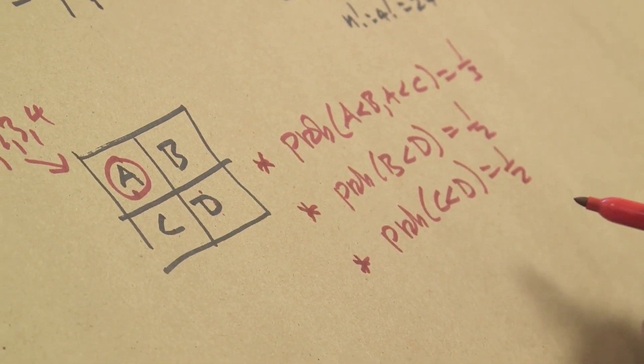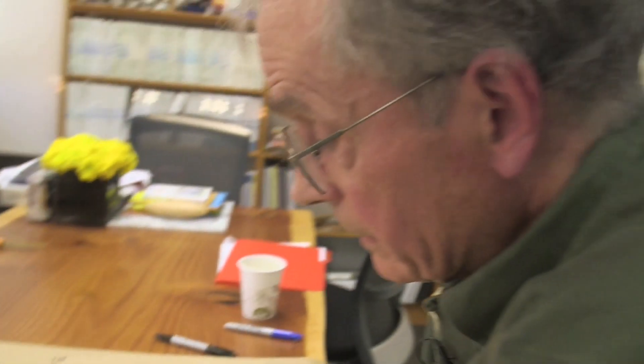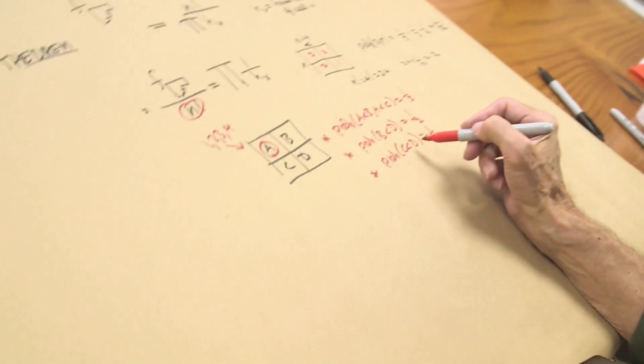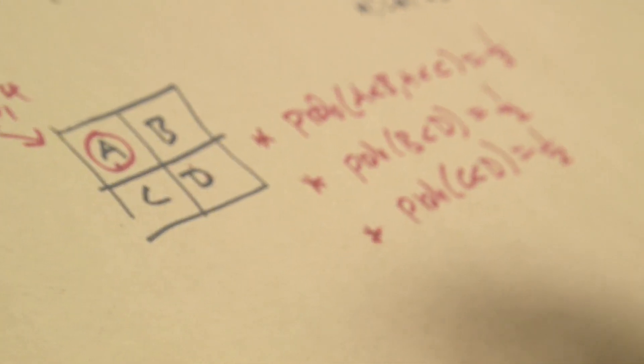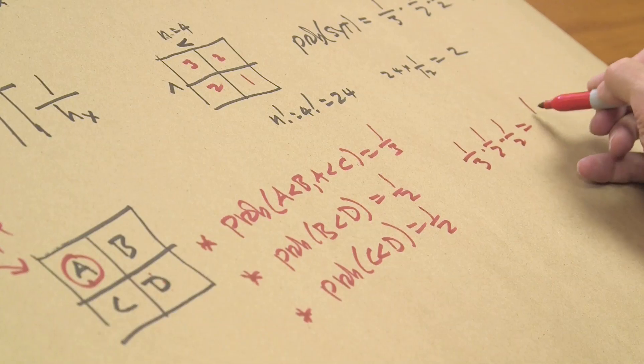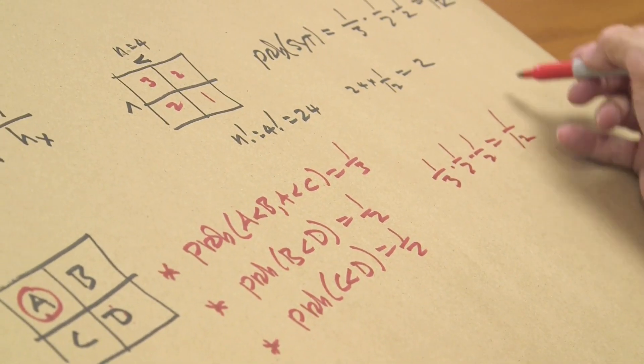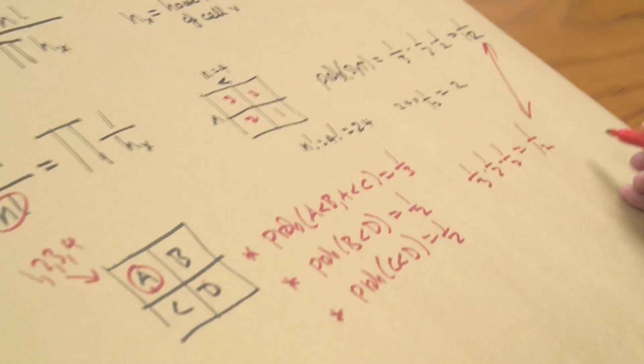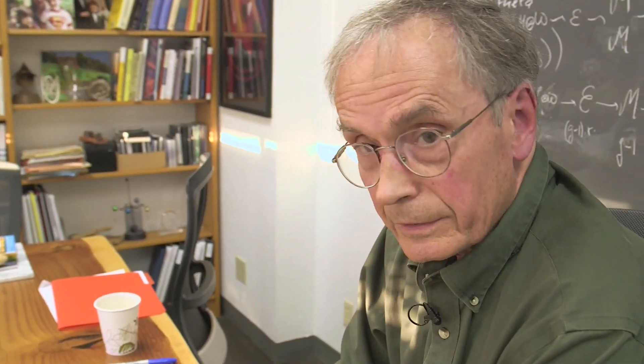Now what I'm writing down here are essentially all the rules. The rules to be a standard Young tableau are that A is less than B, A is less than C, B is less than D, and C is less than D. So what's the probability that all the rules are satisfied? Answer: I take one-third times one-half times one-half, and I get one-twelfth, which is exactly what it should be. So I've proved that this result is correct by this argument. With one shape? With this shape.